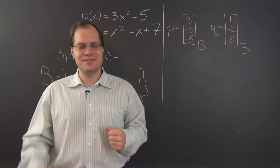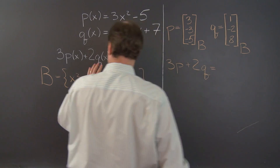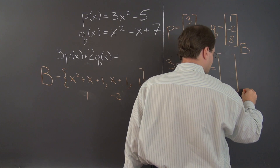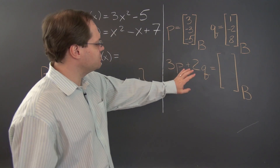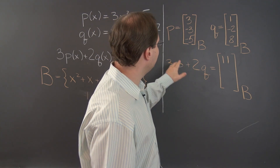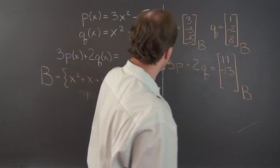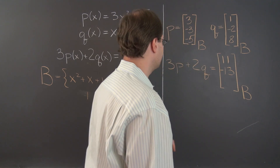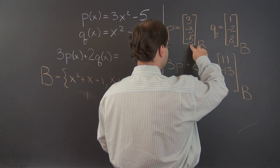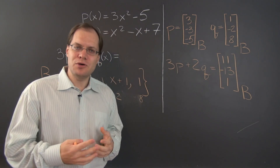We can now solve this problem rather easily in the component space. 3p plus 2q, which is what our problem is, equals — we just have to find this linear combination of these two vectors in R3. I think I can do it in one step: it will be 11, then negative 9 minus 4, negative 13. And in the final spot we have minus 15 plus 16, so 1. This is not the answer to our problem — it's the components of the answer to our problem.